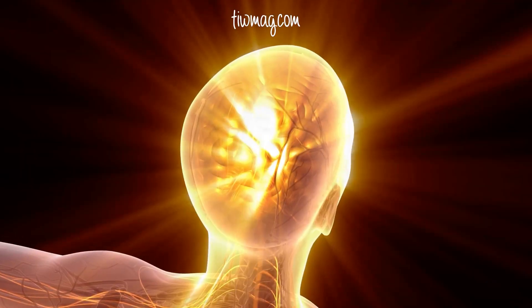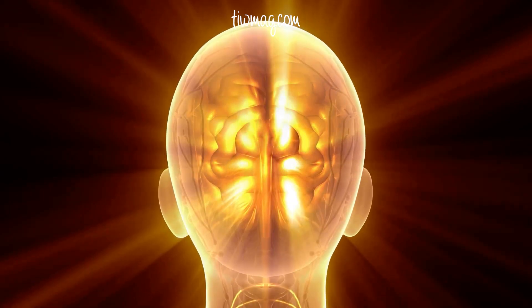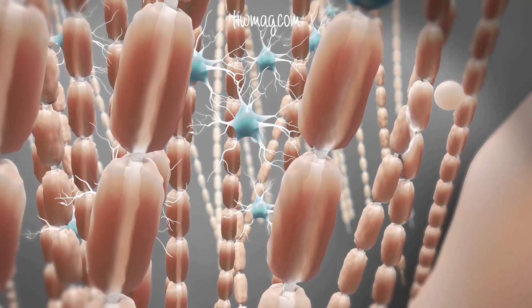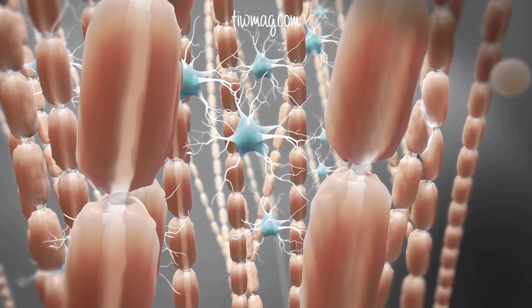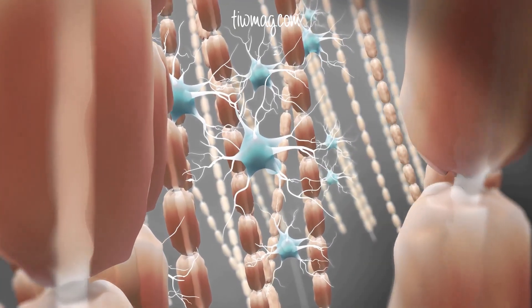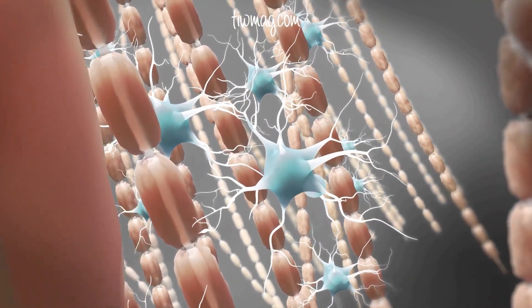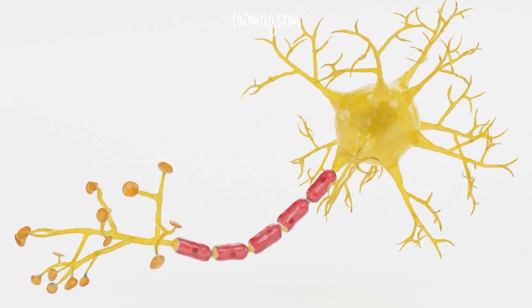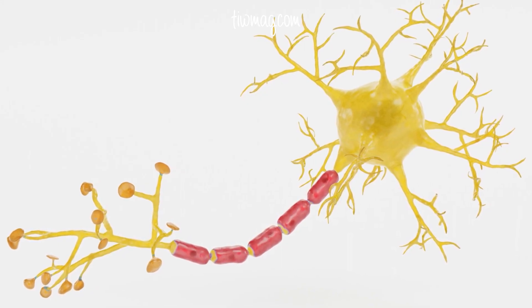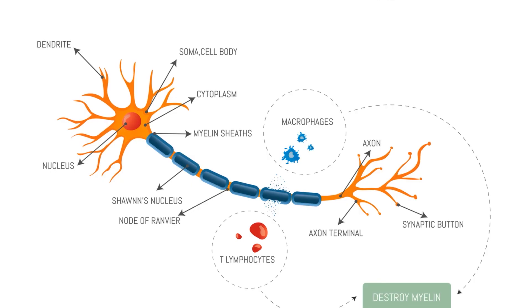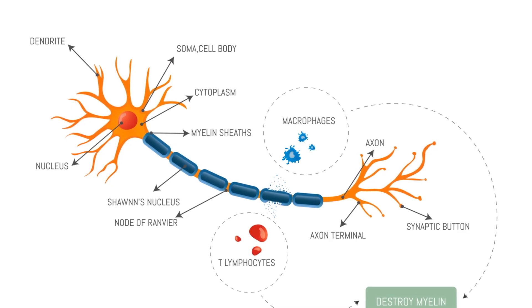Over time, axonal damage and brain atrophy can occur. Axons are the long, thread-like part of the nerve cell (neuron) along which impulses are conducted from the cell body to other neurons. For clarity, a neuron is the basic unit of the nervous system and has three parts: the dendrites, the cell body (soma), and the axon.